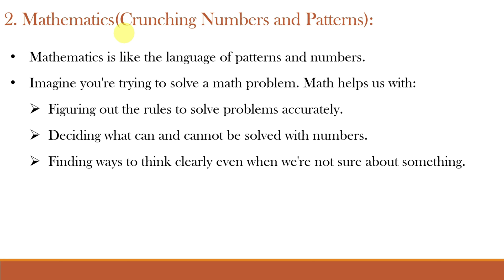Next is Mathematics, which is related to crunching numbers and patterns. Mathematics provides the language and tools for understanding patterns, logic and computation. In AI, mathematics helps in developing algorithms, modeling uncertainty and optimizing decision-making processes. Algorithms used in AI are often based on mathematical principles that allow computers to process data and make predictions. For example, we already know Boolean algebra, fuzzy logic, probability theory and many if-else conditions — and Artificial Intelligence is based on many such conditions. Math helps us figure out the rules to solve problems accurately and find ways to think clearly even when we are not sure about something.